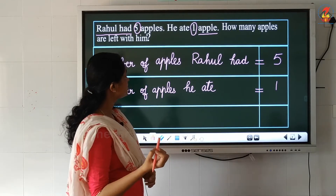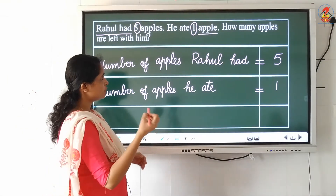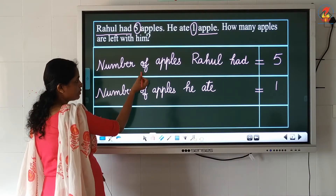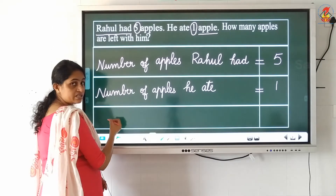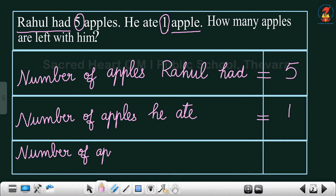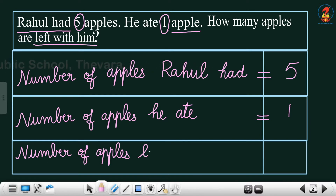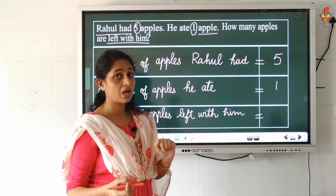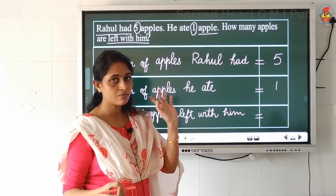Now the last sentence — how many apples are left with him? You can write the last statement starting with 'number of' as well. Number of apples left with him. How will you find the answer? He already had 5, and he ate 1. You have to subtract 1 from the number 5.